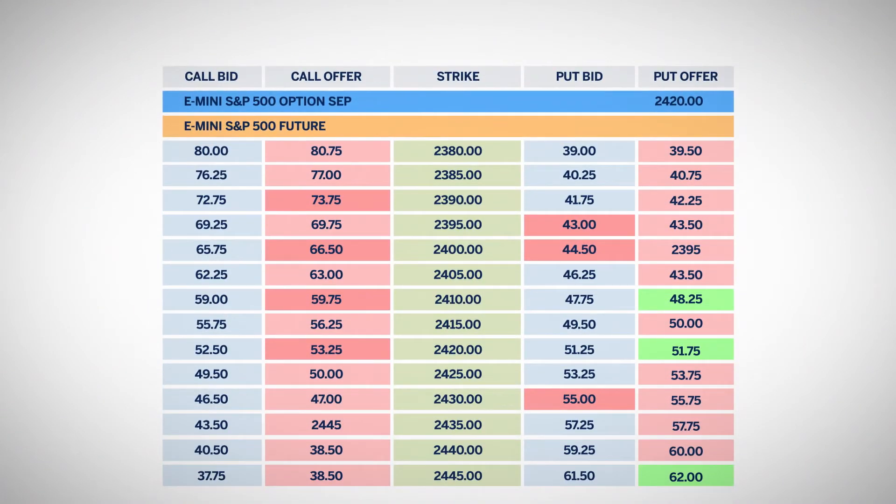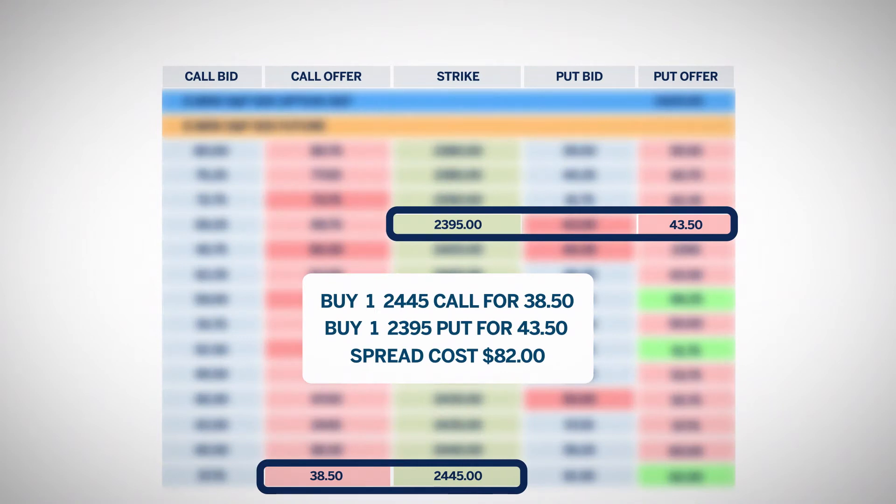For example, if we bought a 23.95 put and a 24.45 call, this would be referred to as the 95.45 strangle.